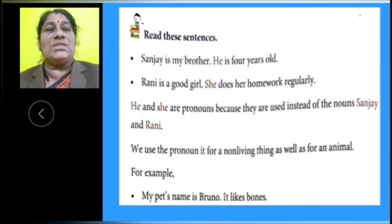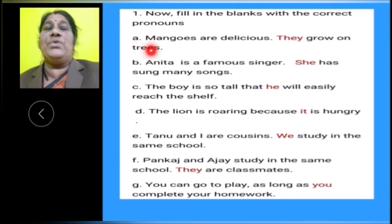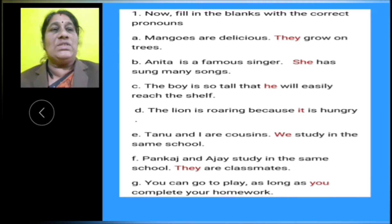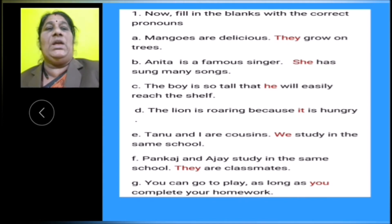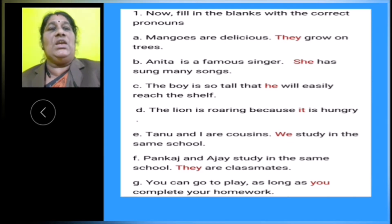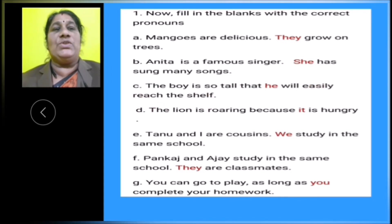Now, let us do the exercise. Fill in the blanks with the correct pronouns. A: Mangoes are delicious. They grow on trees. In place of mangoes, the pronoun they is used. B: Anita is a famous singer. She has sung many songs. In place of Anita, she is used. C: The boy is so tall that he will easily reach the shelf. In place of the boy, he is used.